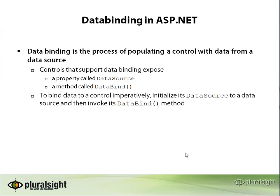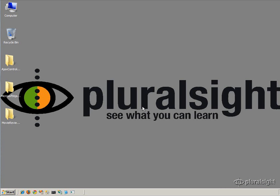Let's start with a look at the process of binding data to controls in ASP.NET. At its core it's pretty straightforward. Any control that supports data binding needs two features: a public property called DataSource, which accepts any object but typically an enumerable collection, and a public method called DataBind. You set the DataSource property to some collection of data, then call DataBind to bring that data into the control's internal collection and prepare for presentation.